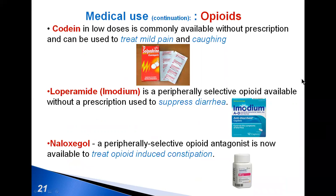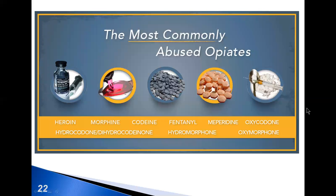Opioids are also used for pain, mild pain relief, suppression of diarrhea, etc. Opioids can produce strong feelings of euphoria and are related to drug misuse and non-medical use, including use for reasons or at doses other than prescribed. The most commonly abused opiates can be seen on this slide.